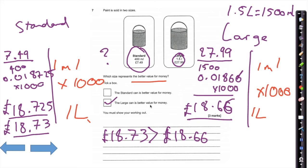Very importantly, make sure that you have your quantities comparable in the same amount — i.e. I compared both at 1 millilitre or both at 1 litre. You must have the same quantities and then compare those prices.